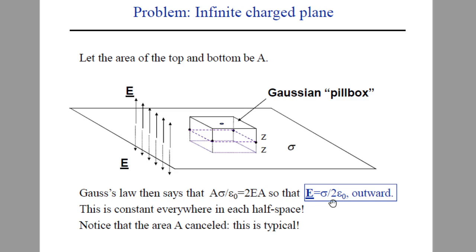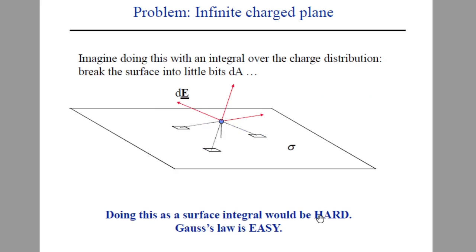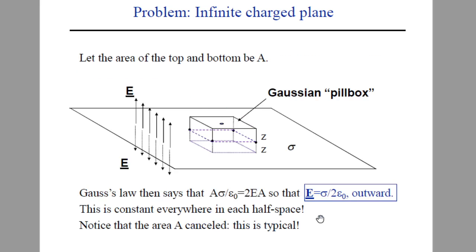Gauss's Law gives: 2EA = Q_enclosed / ε₀ = Aσ / ε₀. So we get E = σ / 2ε₀, directed outward. This is the electric field produced by a plane sheet of charge. Since σ and ε₀ are constants and the result does not involve distance, the electric field due to an infinite plane sheet of charge is constant. This is a powerful application of Gauss's Law.